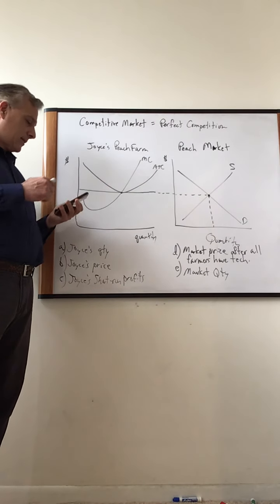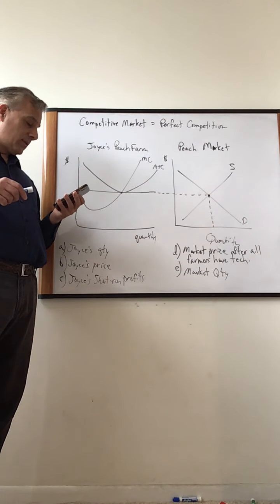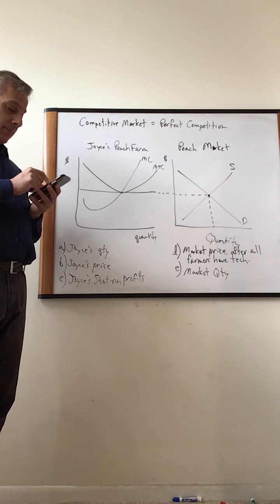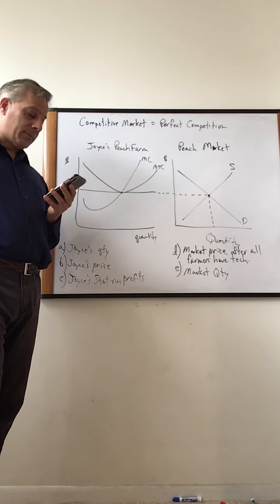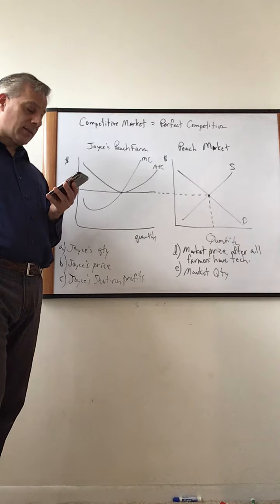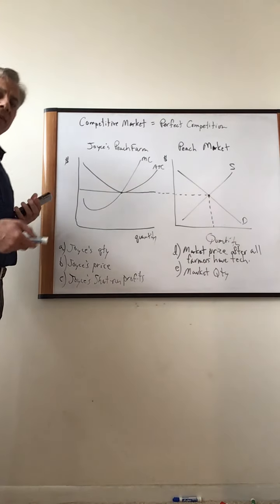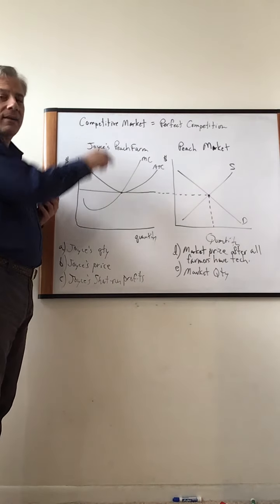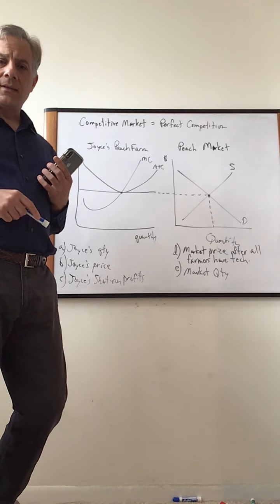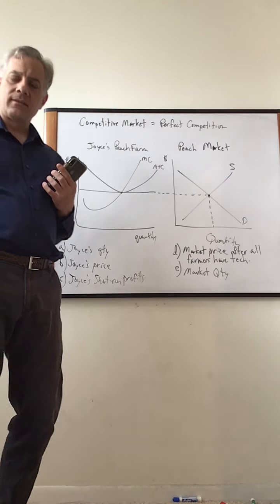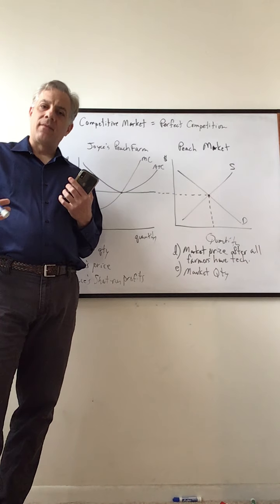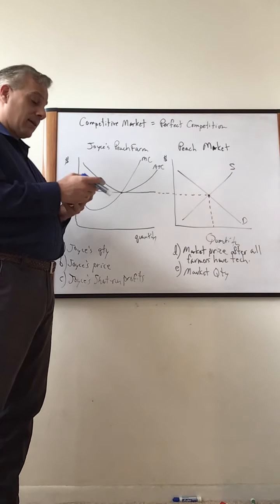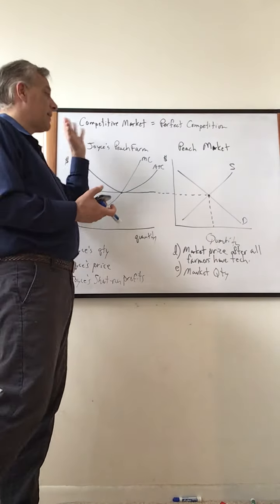We're going to take a look at sample question two from the long question, the 2020 sample questions. It says peaches and nectarines are substitute goods and both are produced under conditions of competitive long-run equilibrium. First of all, when I talk about perfect competition — if you see 'competitive market,' that means perfect competition. It's one of the annoying things about AP.